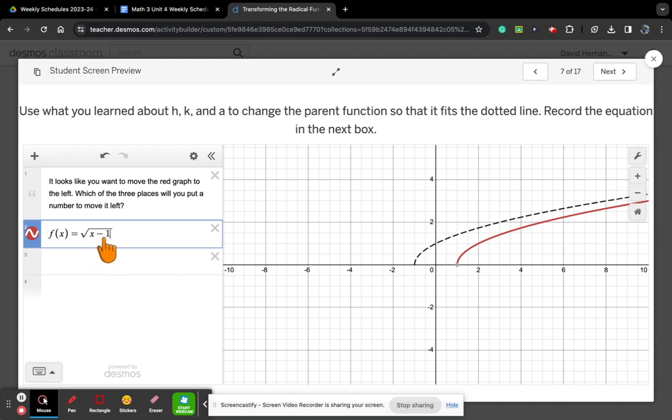Now remember, when it's the H and it's under the square root with the X, it's the opposite. So minus one actually moves it right one. But if we want to move it to the left one, we're going to have to add one. And there it is, that's the match.